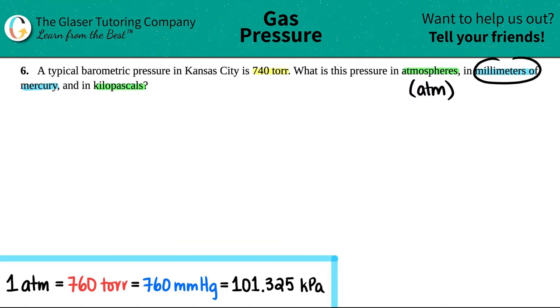Millimeters of mercury. Well, millimeters is mm, and then mercury on the periodic table is Hg. So anytime that you see millimeters of mercury, that's a pressure unit. And then kilopascals, kilo is k, and pascals is Pa. So just be able to identify all of these units.